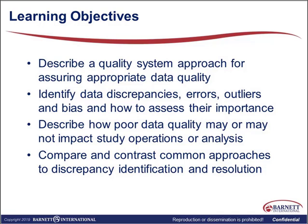Our learning objectives today: we're going to speak about a quality system approach for assuring appropriate data quality, and then we'll identify data discrepancies, errors, outliers, and bias and how to assess their importance. We'll describe how poor data quality may or may not impact study operations or analyses, and compare and contrast common approaches to discrepancy identification and resolution.